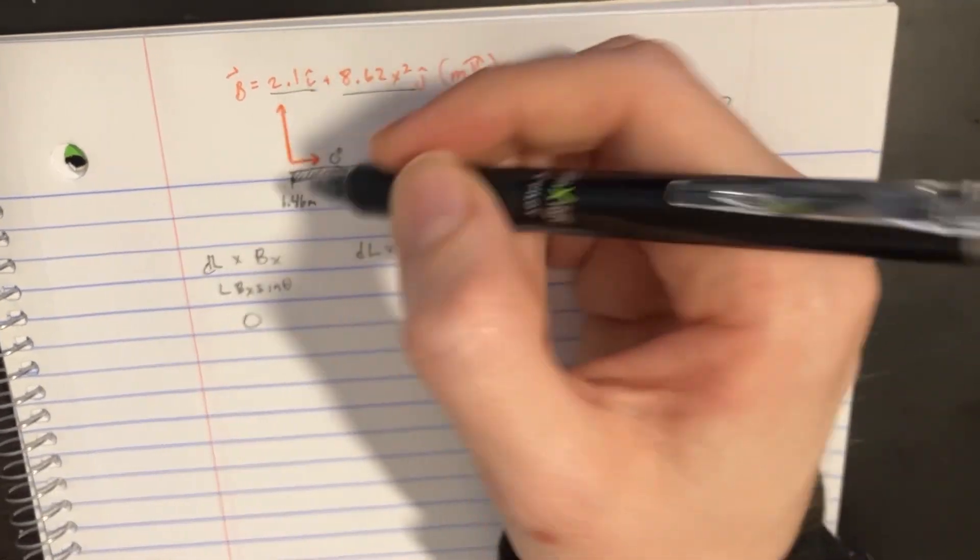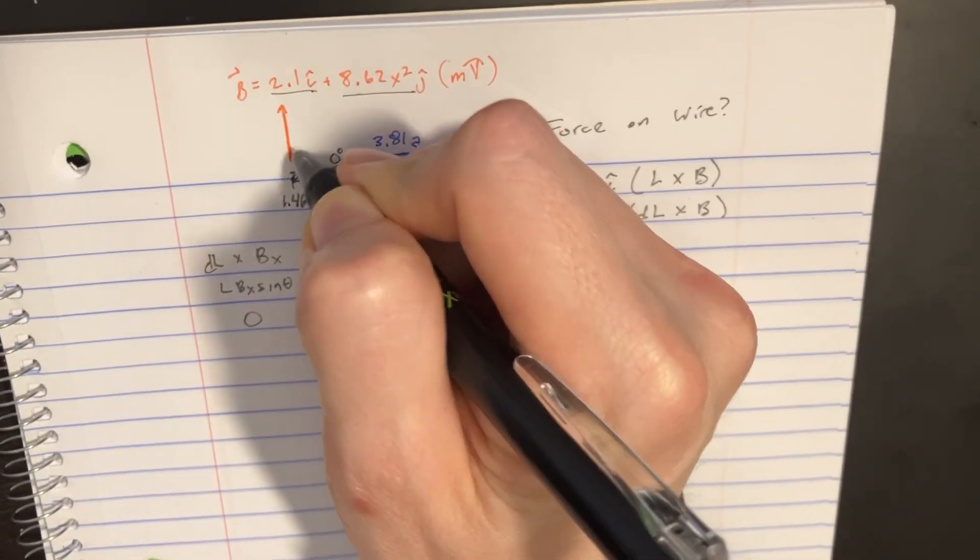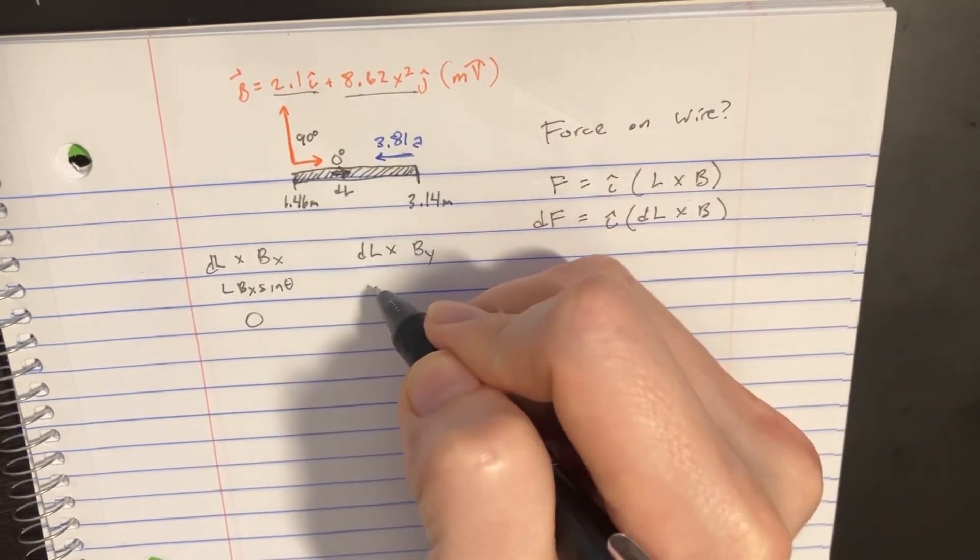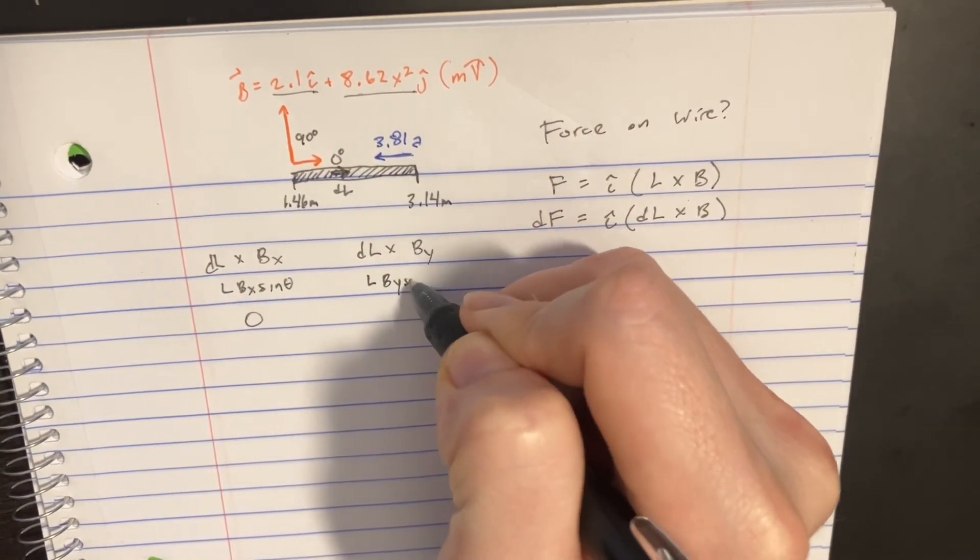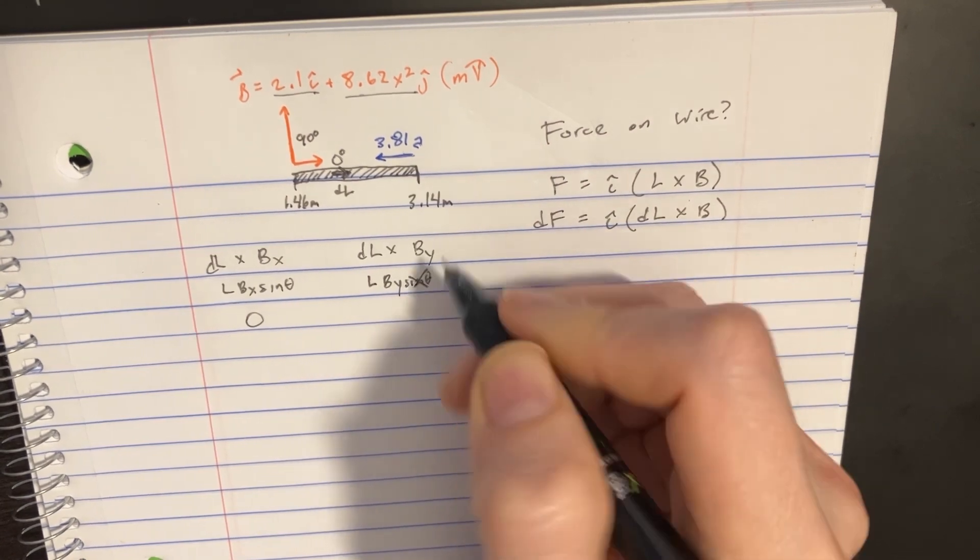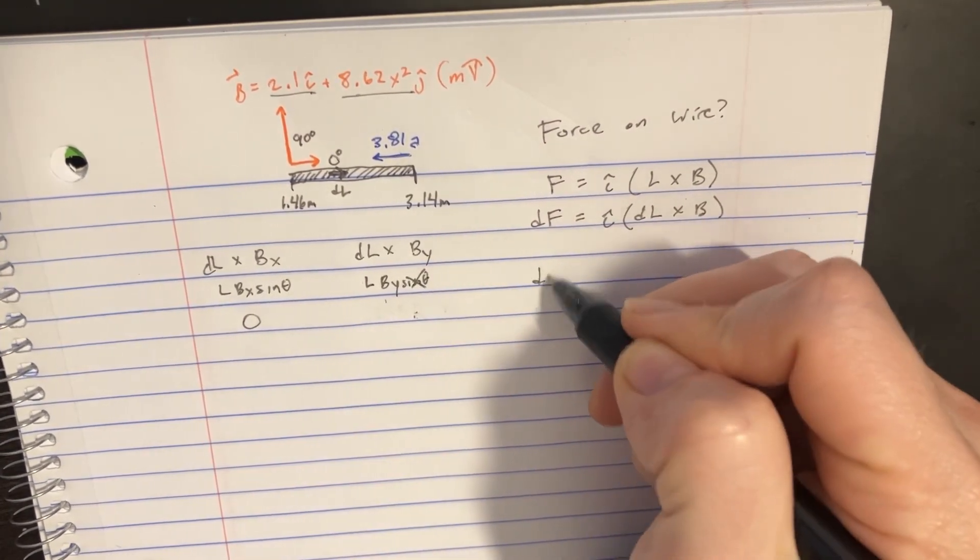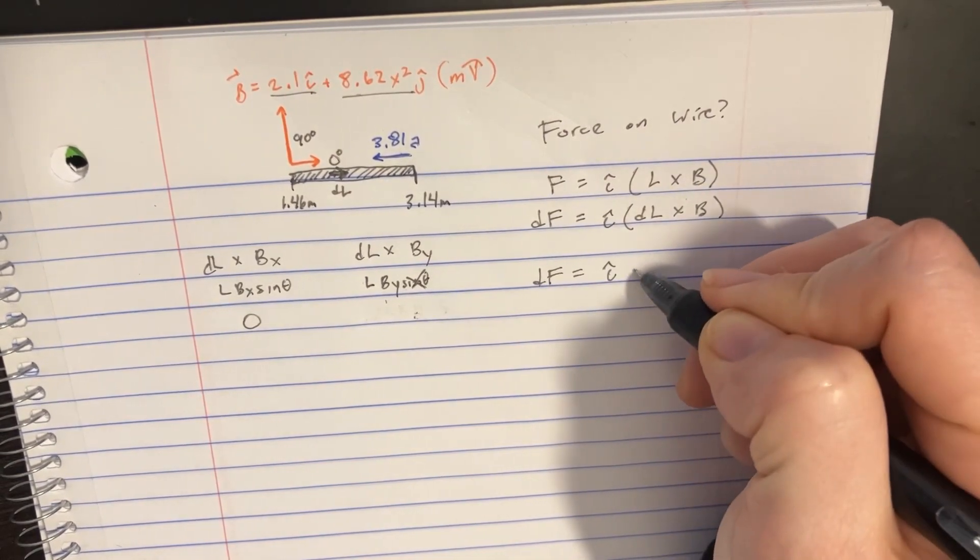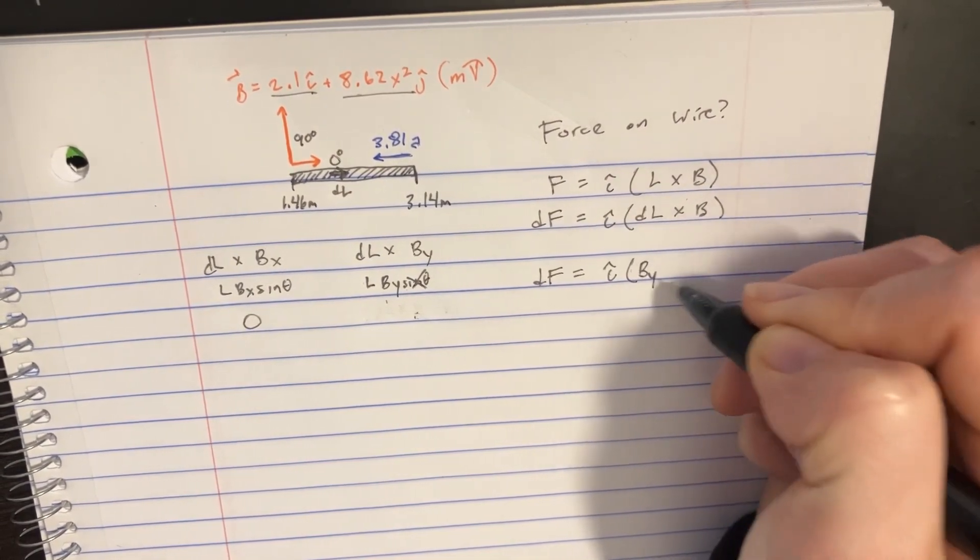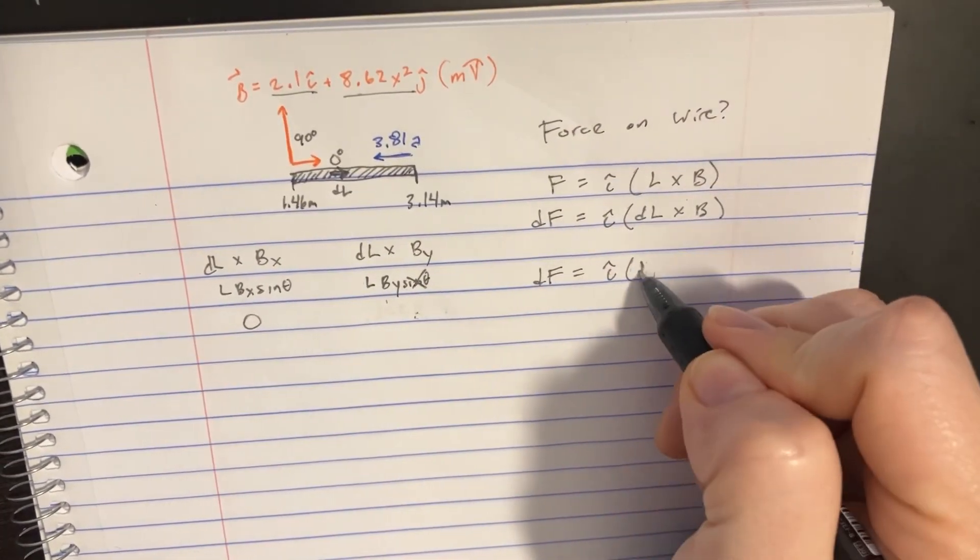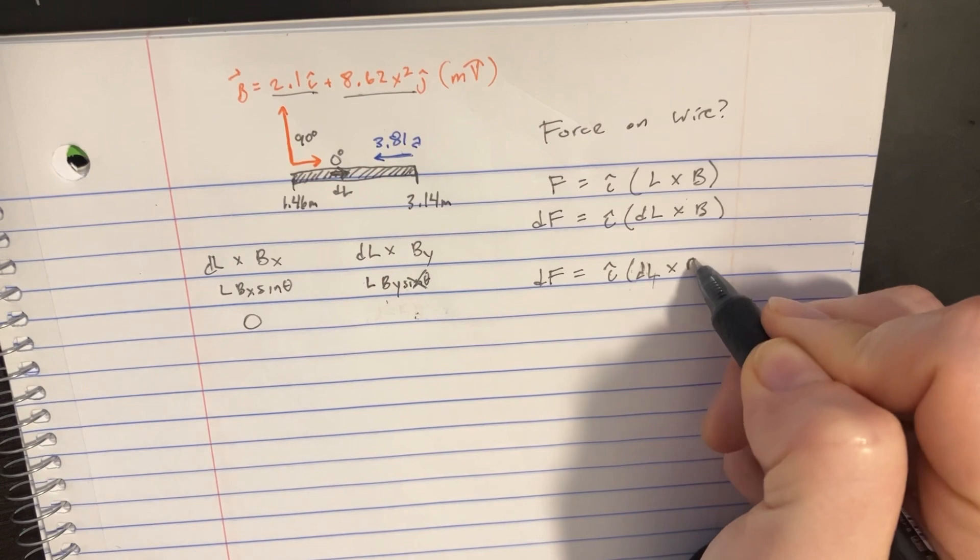Let's focus on the y side. Here we get a 90-degree angle, so when we have L·B_y·sin(θ), it's going to be one. Essentially the sine goes away. We're going to have dF equal to i times dL cross B_y, with dL coming first.